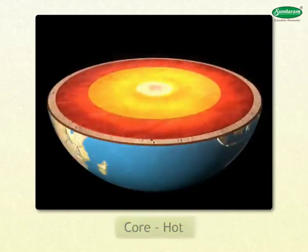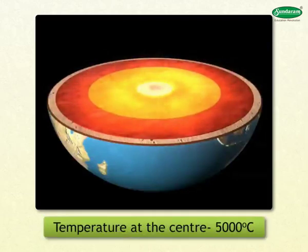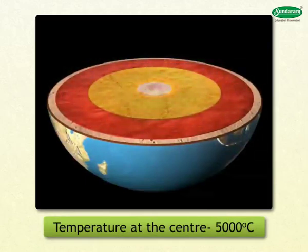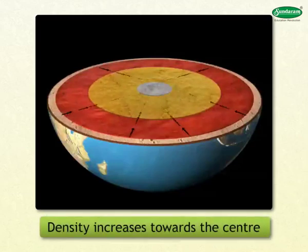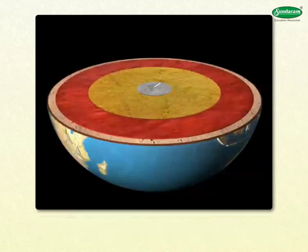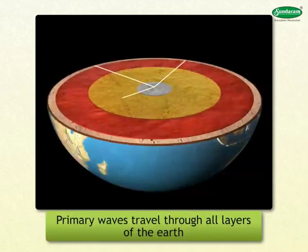The temperature at the center of the earth is estimated to be 5000 degrees centigrade. Secondly, the density of the material increases towards the center.